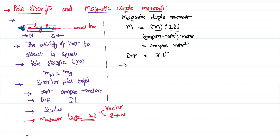Is magnetic moment a scalar or a vector? Magnetic pole strength is a scalar and magnetic length is a vector. The magnetic moment is a product of a scalar multiplied by a vector, so the magnetic moment is also a vector.